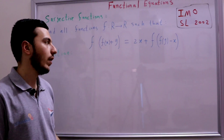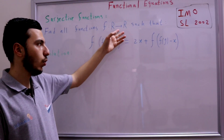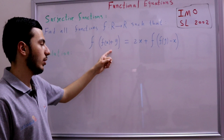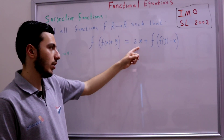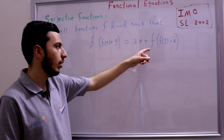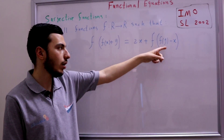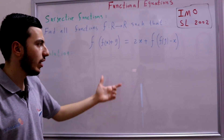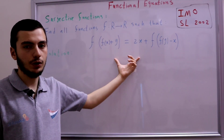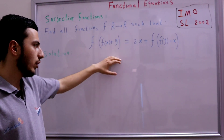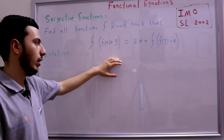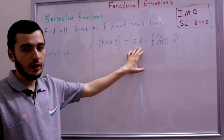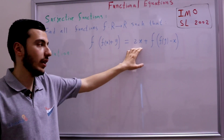We are asked to find all functions f from ℝ to ℝ such that f(f(x+y)) = 2x + f(f(y) - x). The first thing we can notice is that here we have 2 times x and we call this x free.